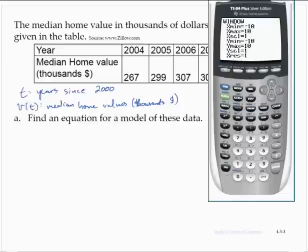Alright, so let's set a window 0 to 10 on the x-axis by 1's. Now on the y-axis, how about 250 to 320? And we'll use a scale of 10s there. Alright, so let's look at the graph of the data, or the plot of the data.